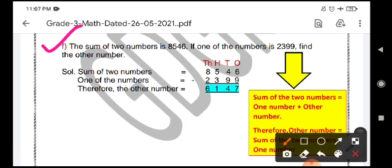Read it very carefully. The sum of two numbers is 8546. What is the sum of two numbers? That is given. If one number is 2399, we are going to find the other number. How to do it?